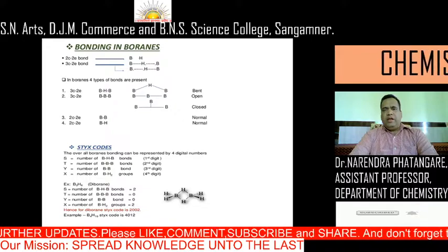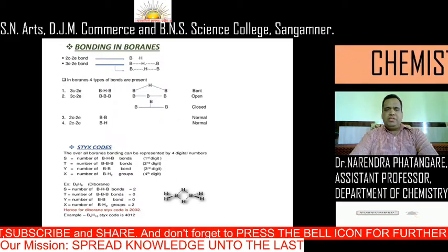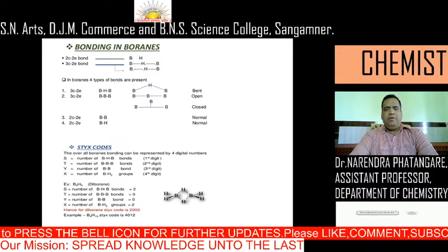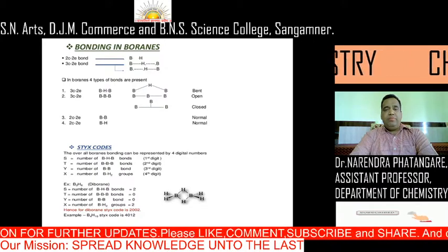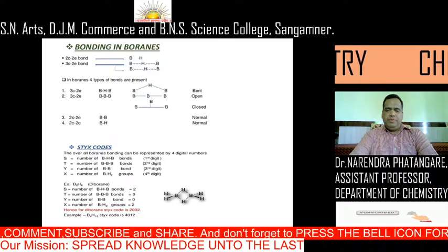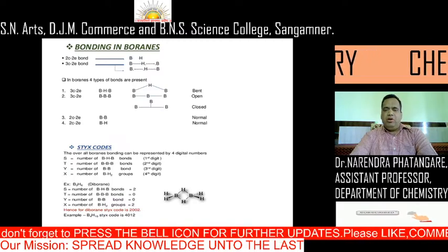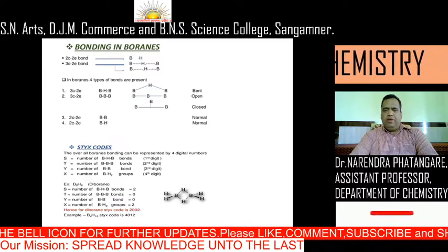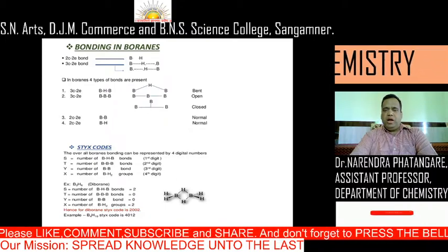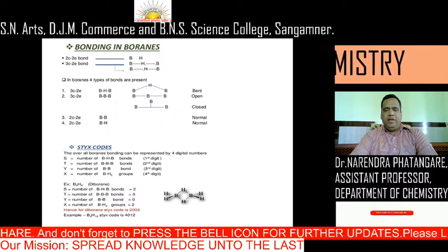Based on the nature of bonding, we can calculate the Styx codes. The overall borane bonding can be represented by four digital numbers: s, t, y, x. s = number of B-H-B bonds (first digit); t = number of B-B-B bonds (second digit); y = number of B-B bonds (third digit); x = number of BH2 bonds (fourth digit). For example, B2H6: s = 2 (two B-H-B bonds), t = 0 (no three-boron system), y = 0 (no B-B bonds), x = 2 (two BH2 bonds). So diborane has Styx code 2002. Similarly, B4H10 has the Styx code 4012.